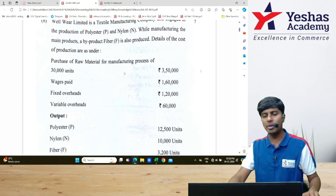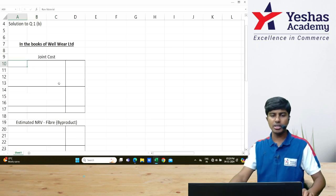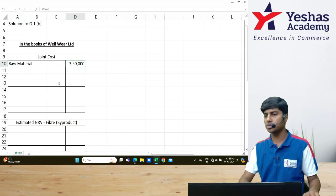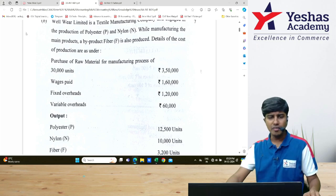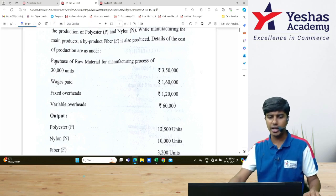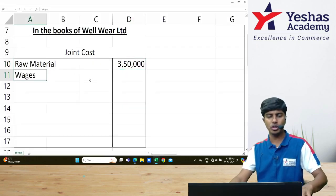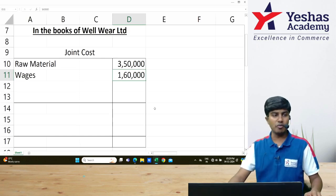How many units of raw material is consumed? 30,000 units, ₹3,50,000. I will identify my joint cost. In that, I will take raw material cost to be ₹3,50,000. The next cost after raw material is wages paid. Wages paid to the extent of ₹1,60,000 will also be added into my joint cost.